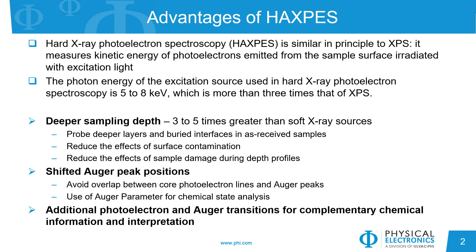The main difference is that in traditional XPS, we use a soft X-ray source, whereas in HAXPES, we use hard X-rays at higher photon energies, and this has several major advantages.